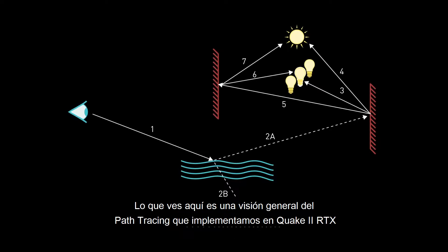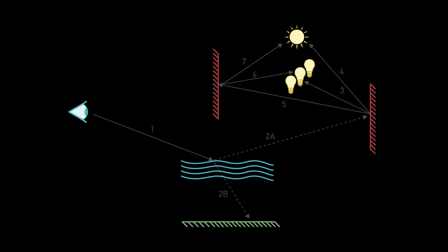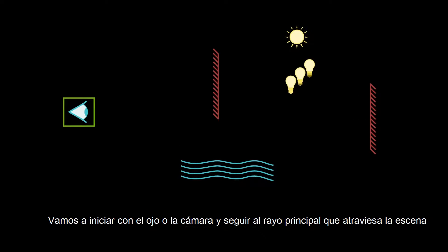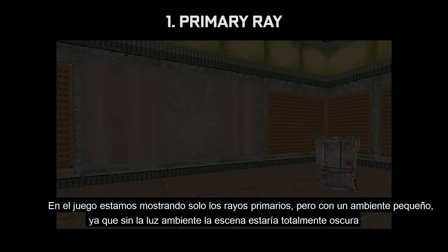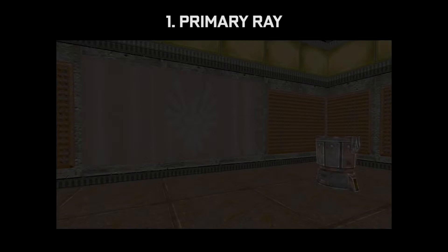What you see here is an overview of the path tracer we've implemented in Quake 2 RTX. We're going to start from the eye, or camera, and follow the primary ray as it traverses into the scene. In the game we're now showing just the primary rays, but with a small ambient term, because without ambient light the scene would be black.